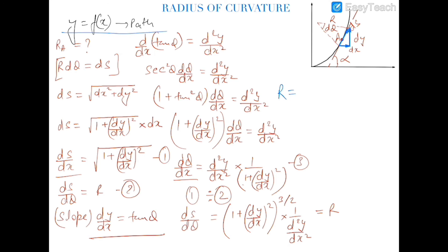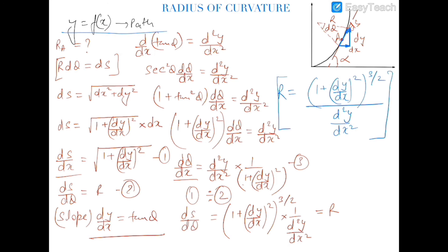Since ds/dθ equals the radius of curvature, the radius of curvature at point A on the curve y = f(x) is: R = (1 + (dy/dx)²)^(3/2) / |d²y/dx²|. This is the required formula for the radius of curvature at a general point on a curve. You can use this formula directly in any problem, and we will be solving questions using this formula. Thank you.